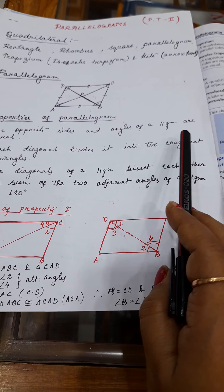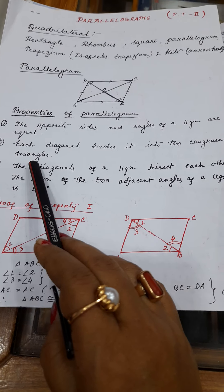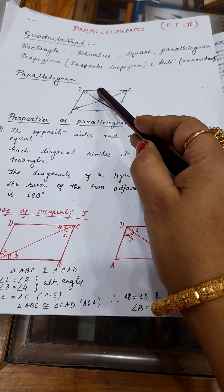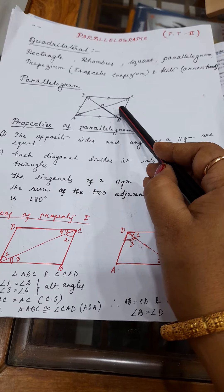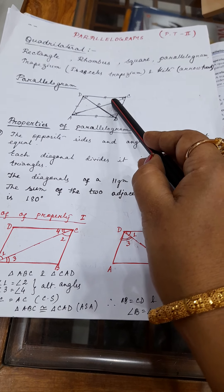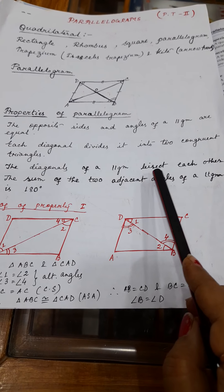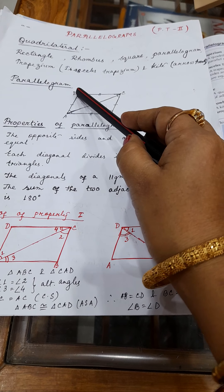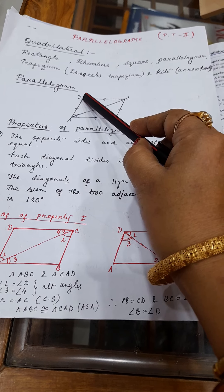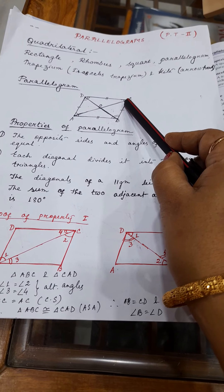A diagonal of a parallelogram divides it into two congruent triangles — congruent meaning equal in both sides and angles. Diagonal AC divides the parallelogram into two congruent triangles, and diagonal BD does the same. The diagonals of a parallelogram bisect each other: diagonal AC bisects BD, meaning OB equals OD, and diagonal BD bisects AC, meaning OA equals OC.